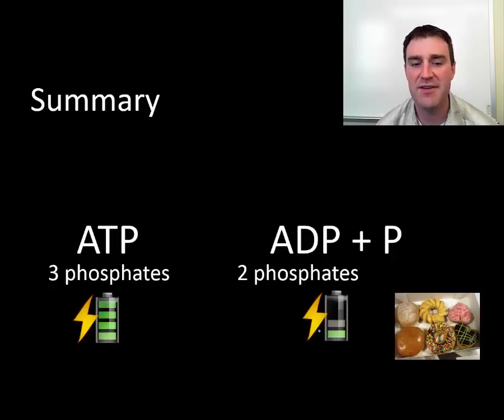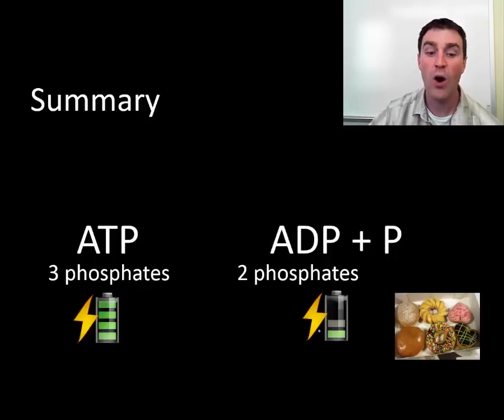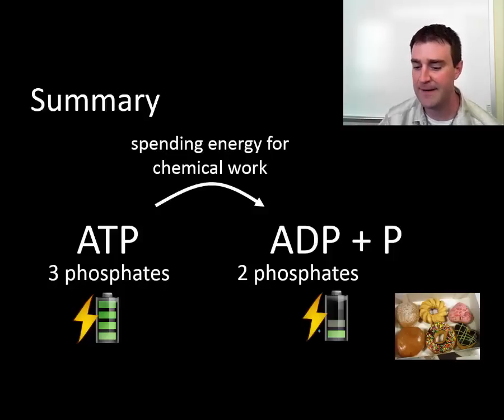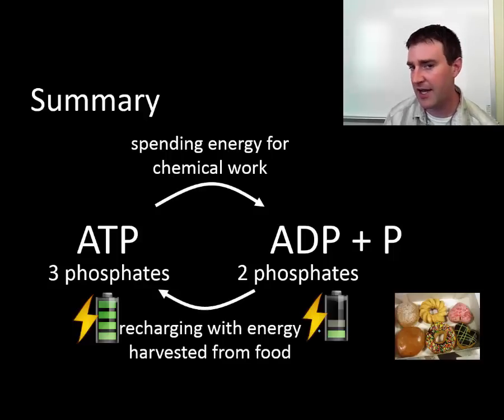So just to kind of summarize everything, we're really focused on the ATP molecule and the ADP that it can become when ATP spends energy by transferring one of its three phosphates to something like a protein so that that protein can do its job. When that happens, and after the protein finishes, the phosphate falls off again, and we're left with ADP, a two-phosphate molecule, and we'd like to reattach that phosphate. Well, that can be done by cutting up food energy, and the energy that's released from doing that recharges the ATP by putting the two together again.